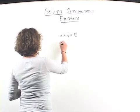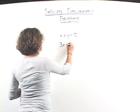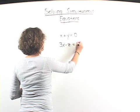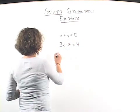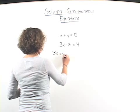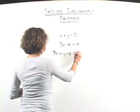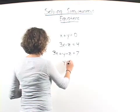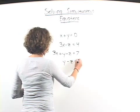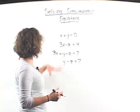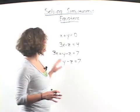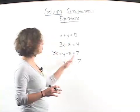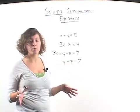Now, you could have 3x minus z equals 4. You could have 3x plus y minus z equals 7. Y minus z equals 7. Now, any of these all have more than one variable. You'll see there's x and y, x and z, x, y and z, whatever.